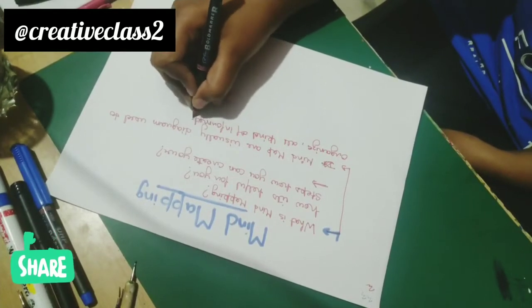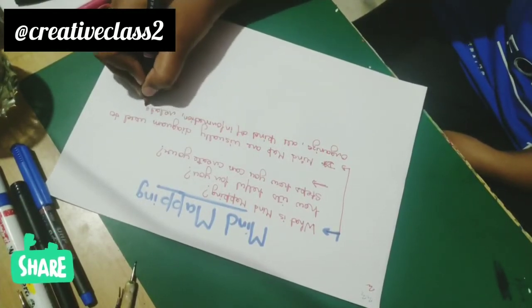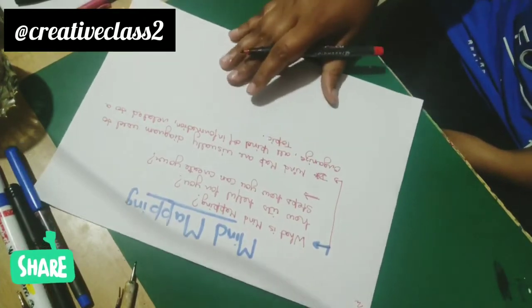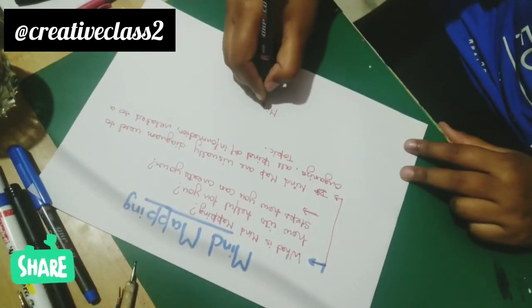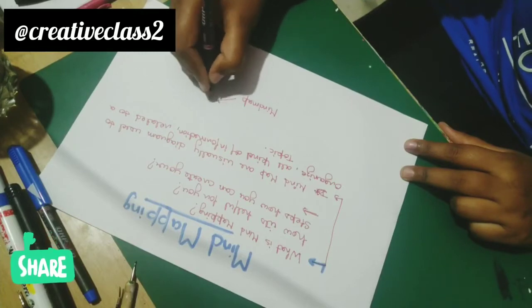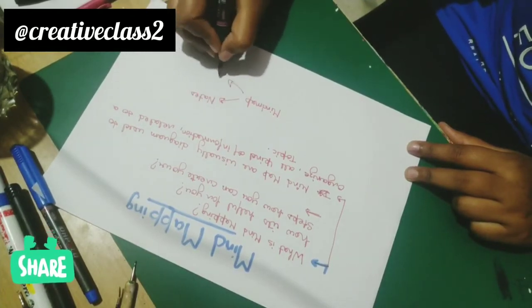Now we will move further how you can make your own. You simply need a sheet of paper and some set of markers. Use your sheet in landscape. It provides you wide area as compared to portrait.